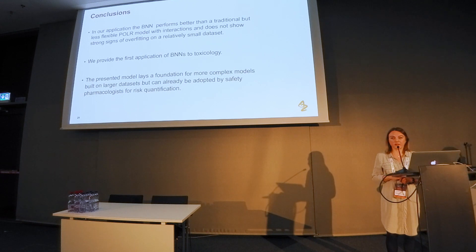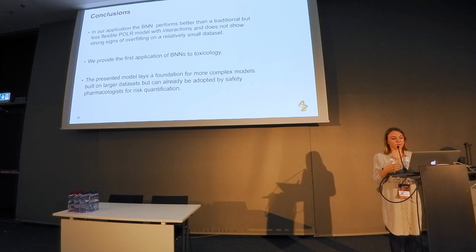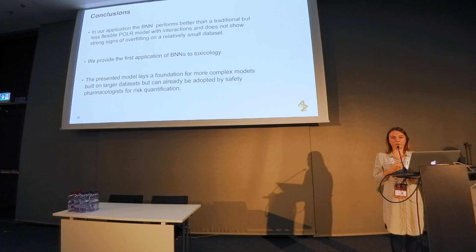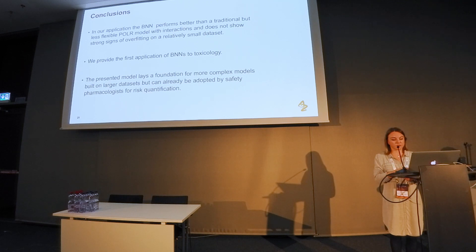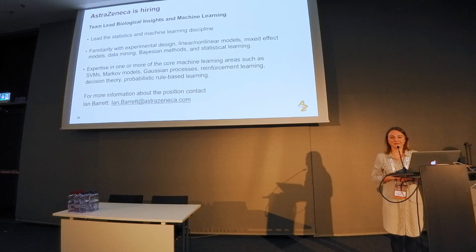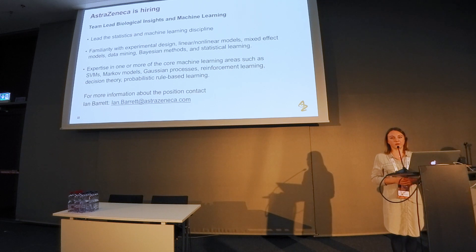To summarize: the new model does better than the previous model, even though the previous published model was already a great step ahead. To my knowledge, this is the first application of Bayesian neural networks to toxicity prediction. The model is quite simple, but our safety biologists are already relying on it to progress and rank their compounds, so there are reasons to believe this work will expand. Thank you very much — please feel free to find me later.